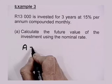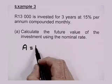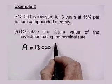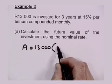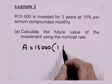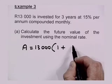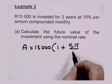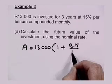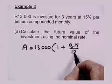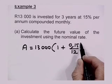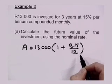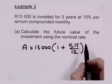The future value formula gives us: FV = 13,000 × (1 + 0.15 ÷ 12) to the power of... We divide by 12 because you're getting interest 12 times a year.